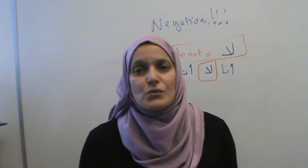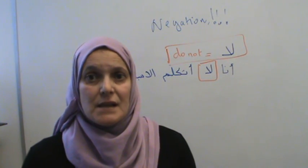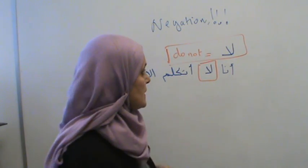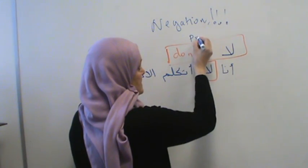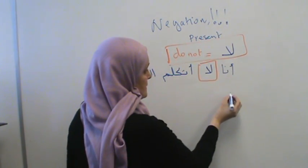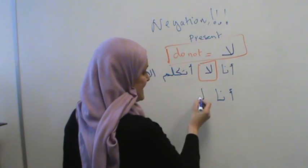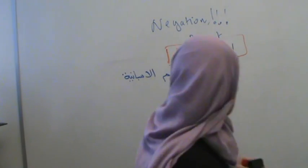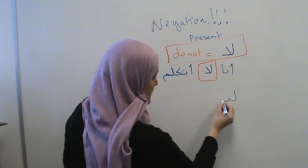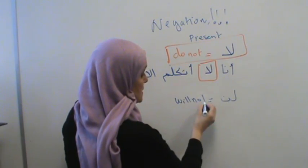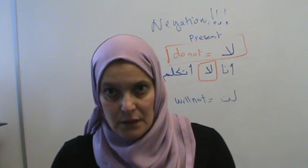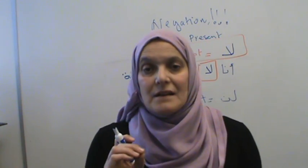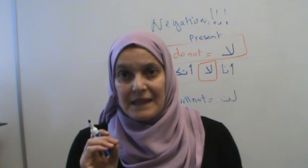Now moving to the future tense. The equivalent for future negation is 'len.' 'Len' means 'will not.' And the rule is: len plus present tense. Some students think in English and conjugate the verb in the future tense before adding 'len' — that is wrong. It is simply len plus present tense. I am repeating: present tense.